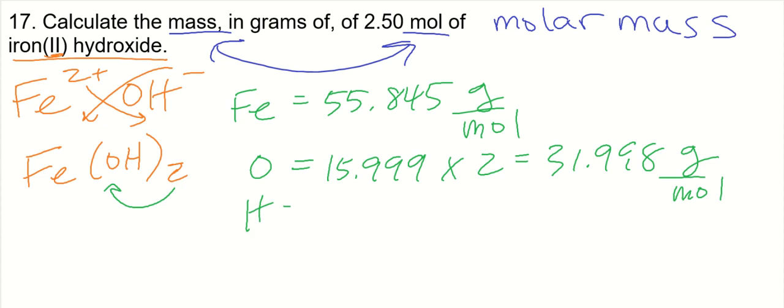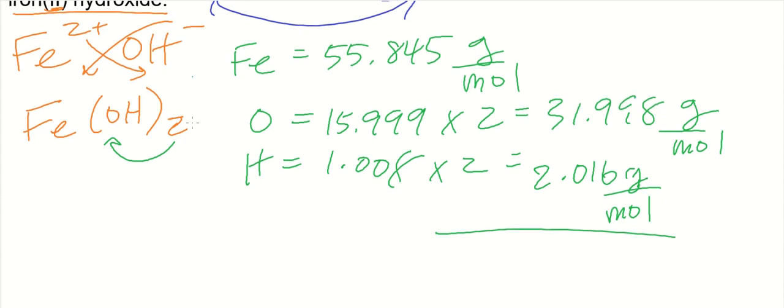Hydrogen, we also have two of those. It's 1.008 times 2, which is 2.016 grams per mole, and we're going to add all these components up to get the molar mass of iron(II) hydroxide.